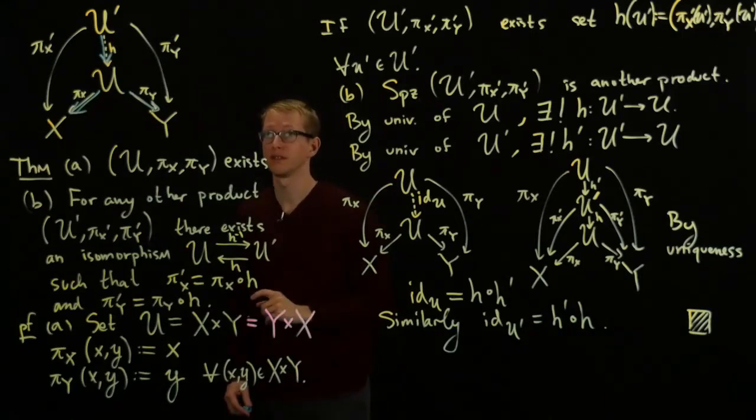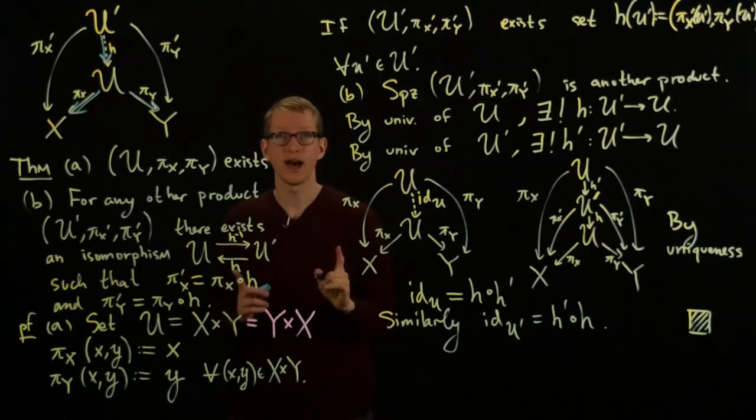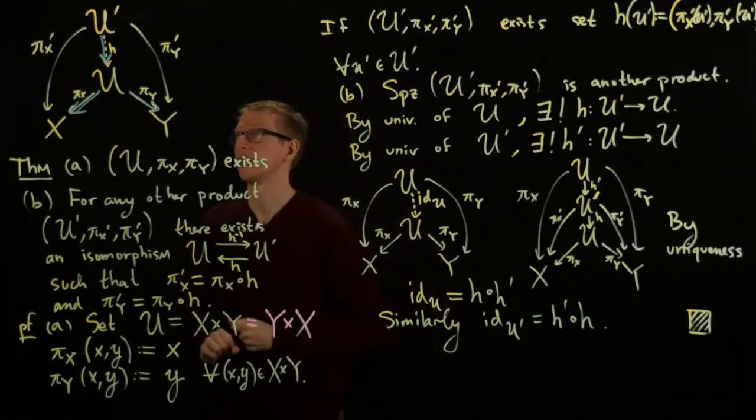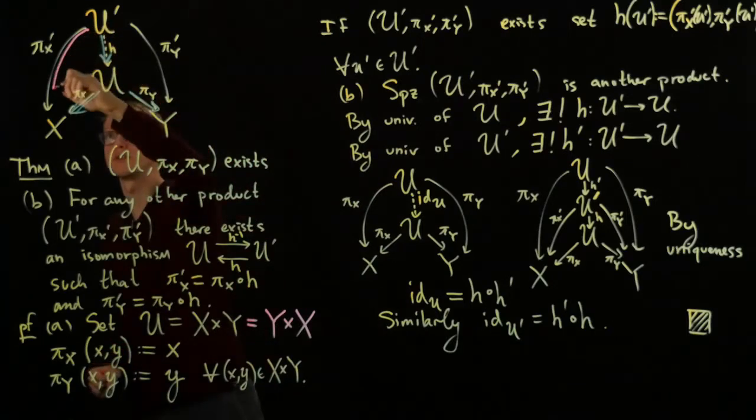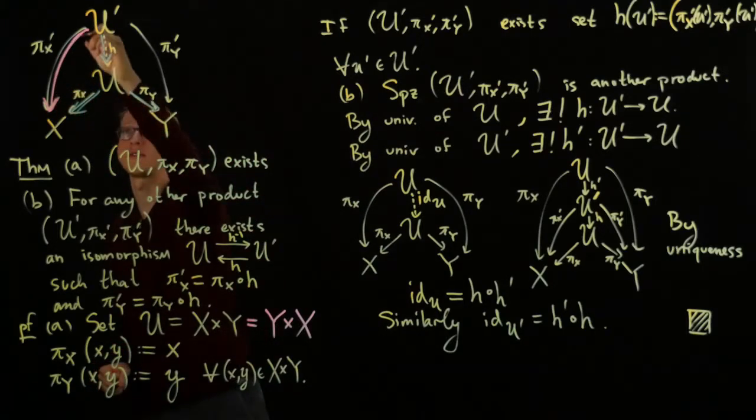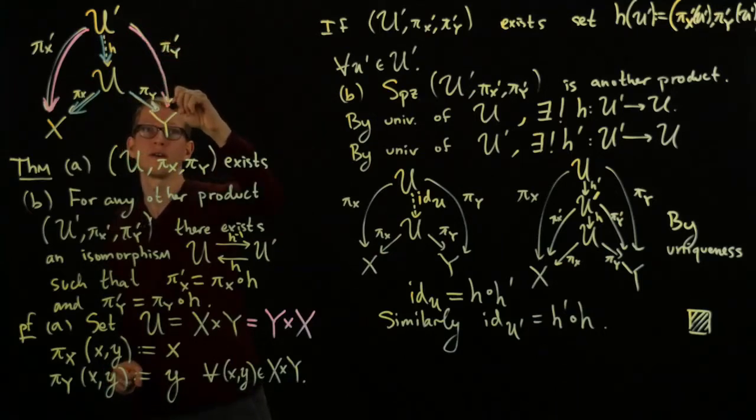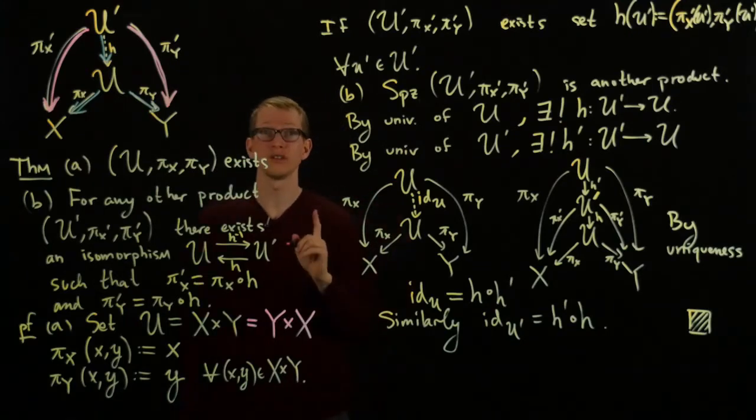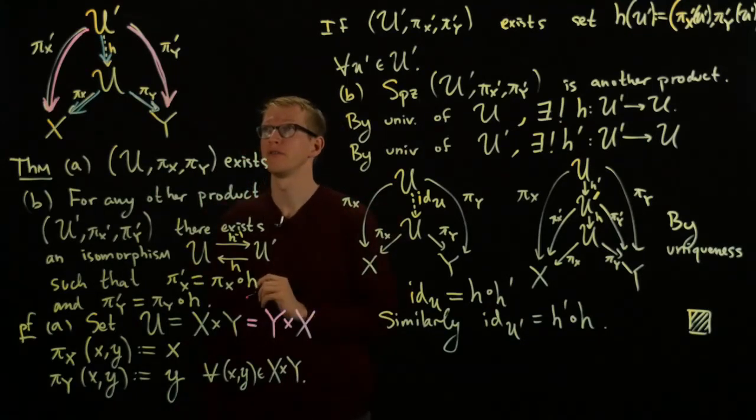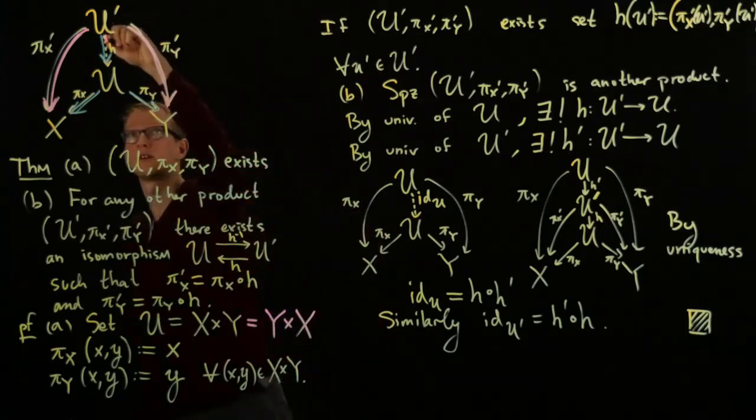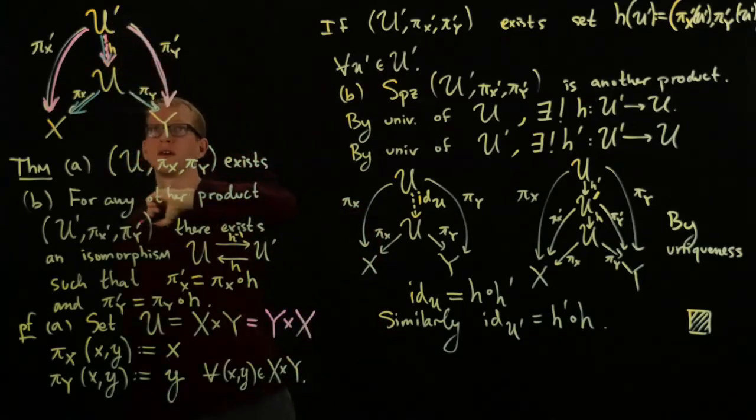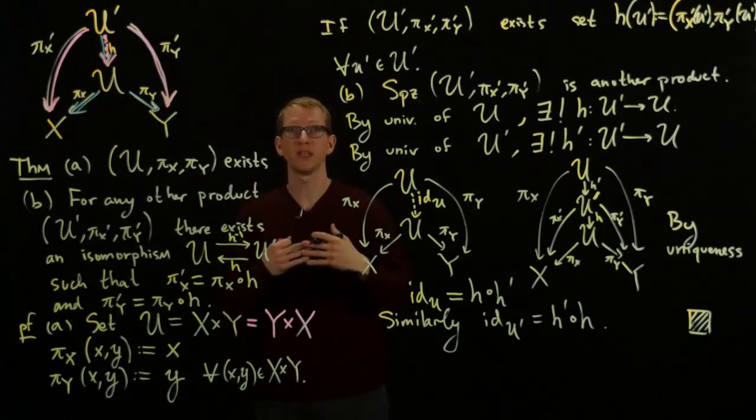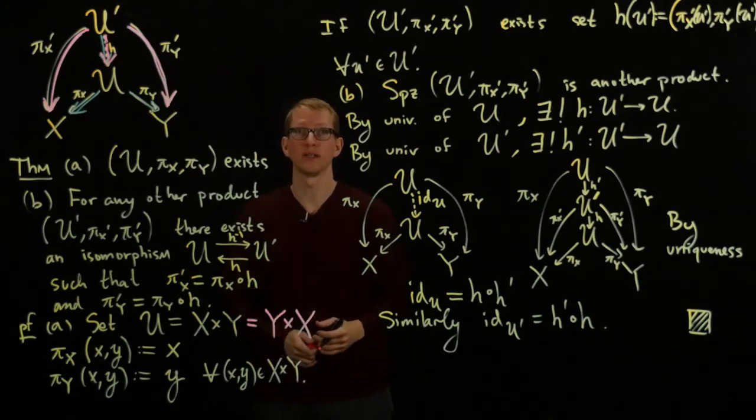conversely and this is where the universality comes in if I know what the component functions are, if I have component functions they don't have to be projections they could be anything, if I have these component functions then by the universality condition there exists a unique map from my domain into the product